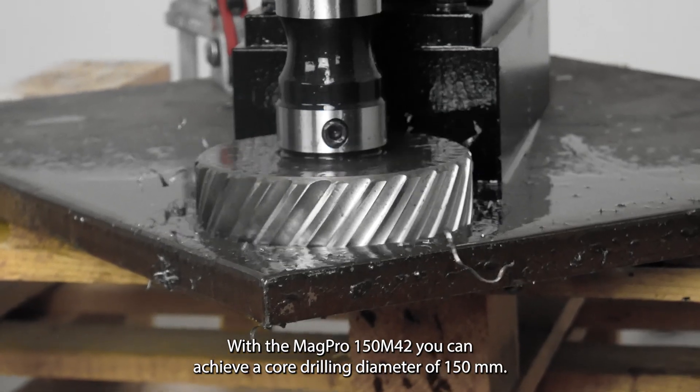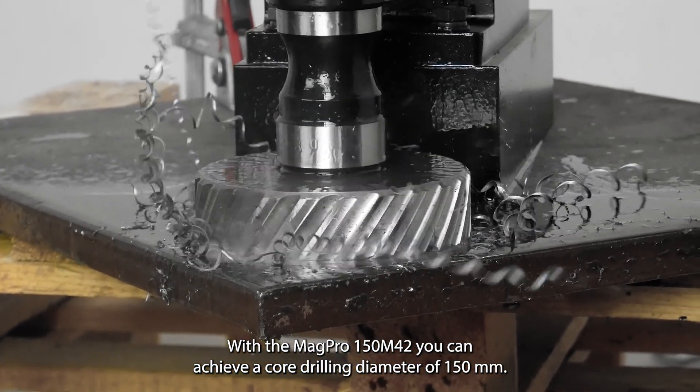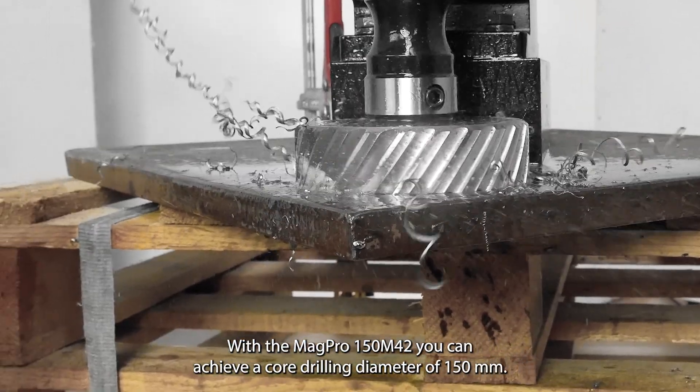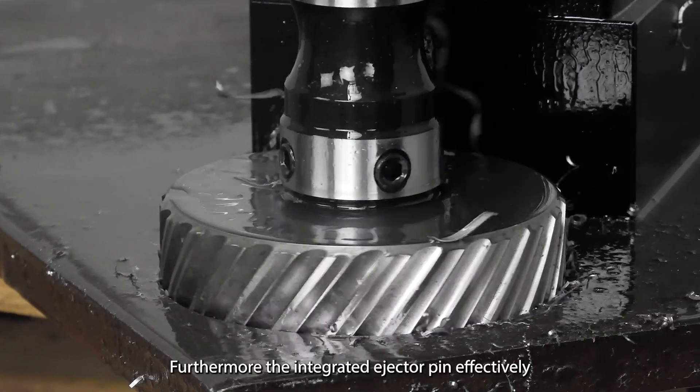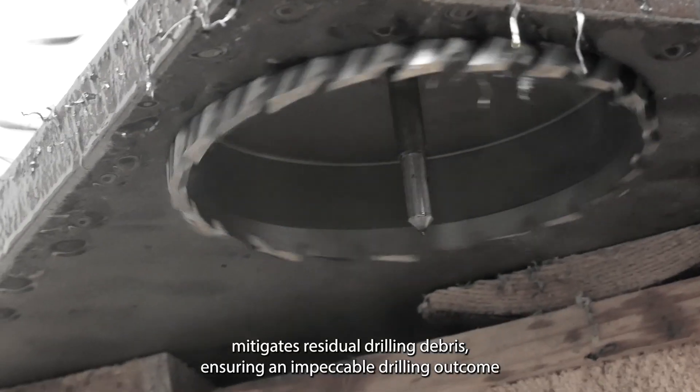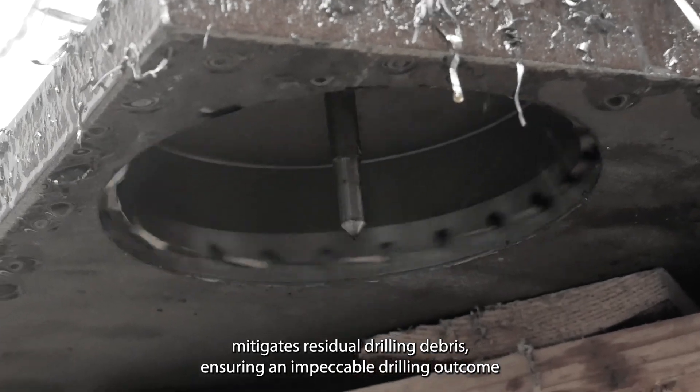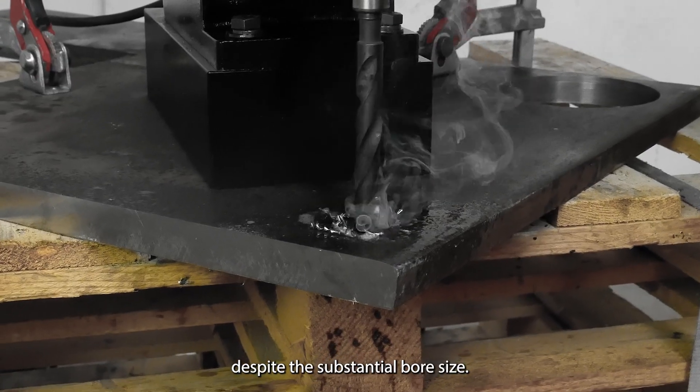With the MAG PRO 150M42, you can achieve a core drilling diameter of 150mm. Furthermore, the integrated ejector pin effectively mitigates residual drilling debris, ensuring an impeccable drilling outcome despite the substantial bore size.